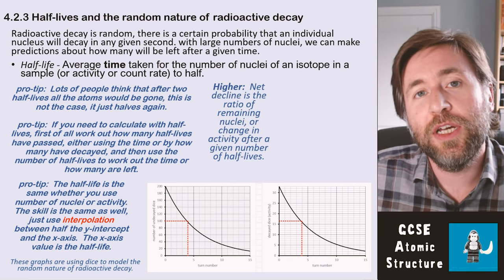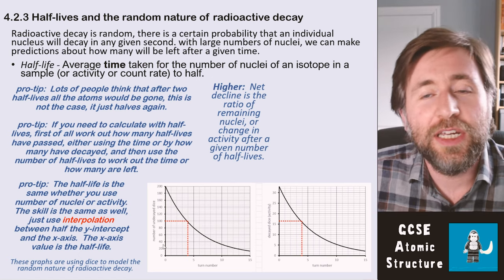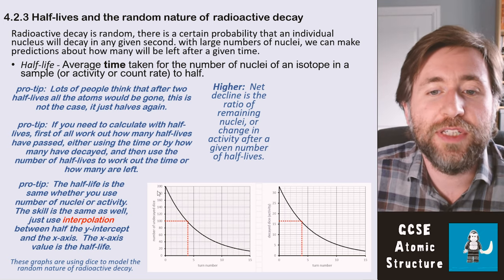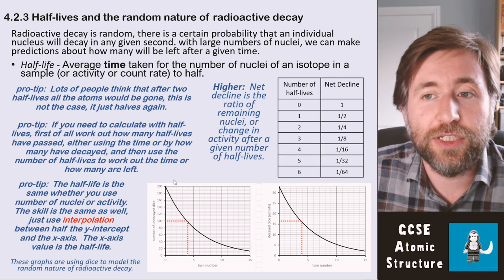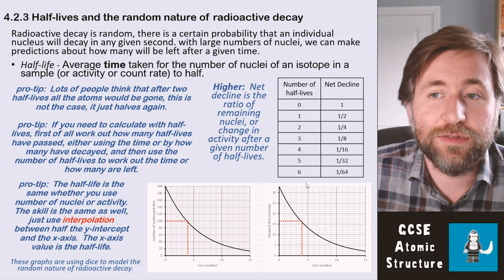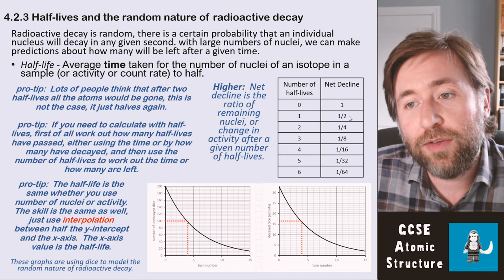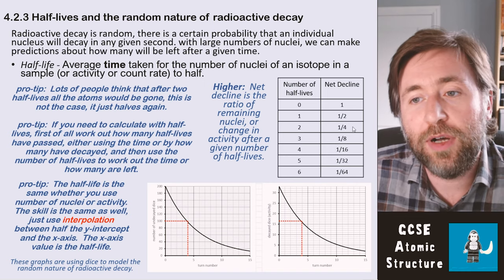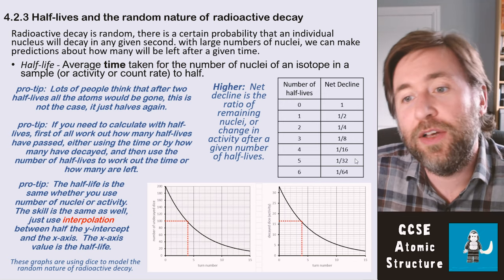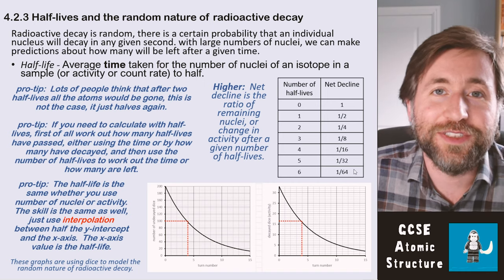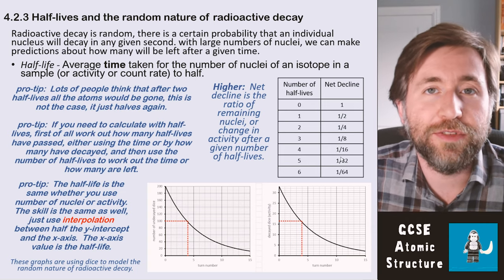In the higher tier, you need to know how to use what's called net decline. That's not really that challenging — it's just the ratio of remaining nuclei. Rather than give you a number of nuclei, they're going to ask you for the ratio or to use the ratio. After one half-life you've got one half, after two half-lives a quarter, after three an eighth, four half-lives a sixteenth, five half-lives a thirty-second, and six half-lives a sixty-fourth. That is just one over two to the power of the number of half-lives that have passed.